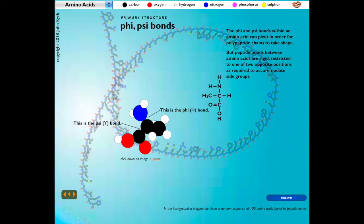The nitrogen of the amine group and the carbon in the carboxyl group are attached to the alpha carbon by single bonds, allowing the bonds to twist. The amount of rotation is limited to angles that avoid collisions between atoms. The bond between the nitrogen and alpha carbon is the phi bond, while the bond between the carboxyl carbon and the alpha carbon is the psi bond. The peptide bonds between amino acids are themselves rigid, restricted to one of two opposite positions as required to accommodate side groups. The psi and phi bonds allow the end groups to pivot to these positions.